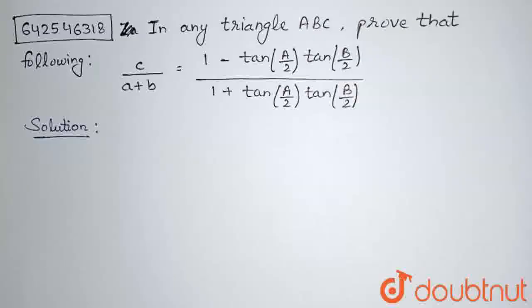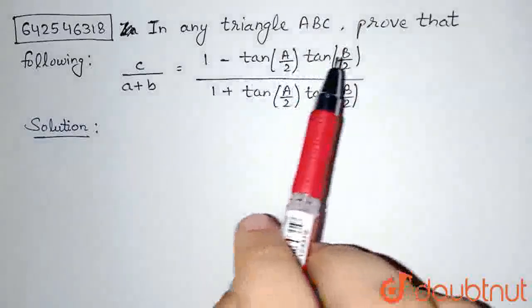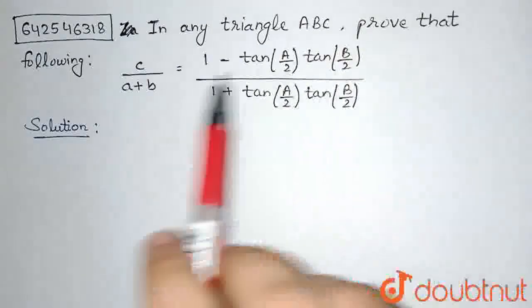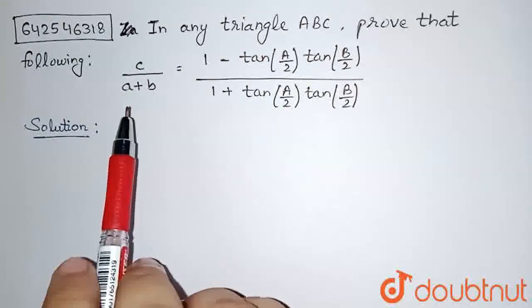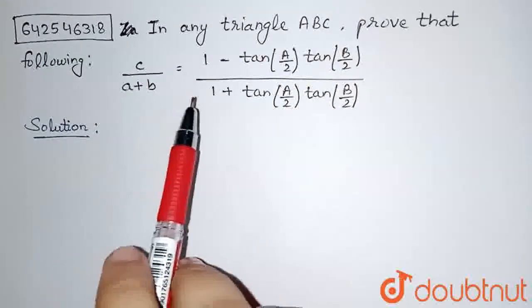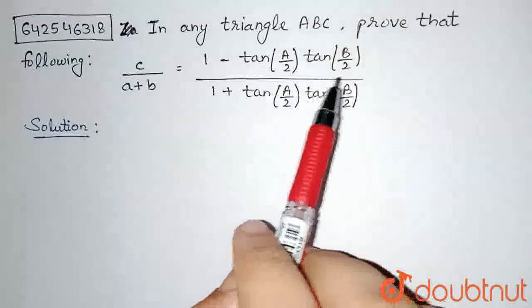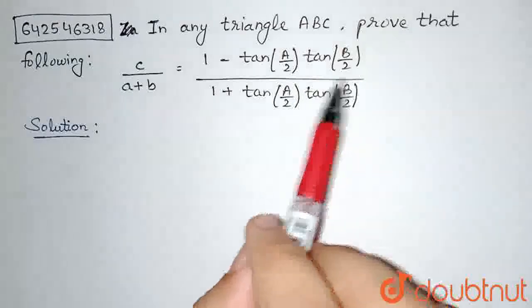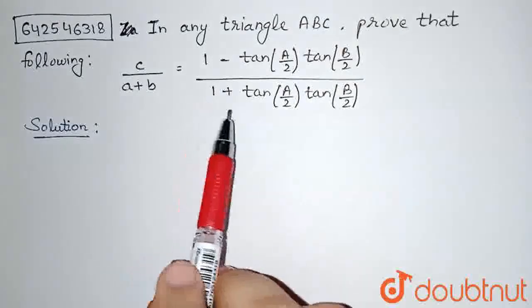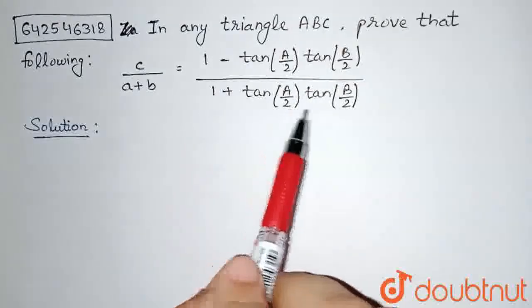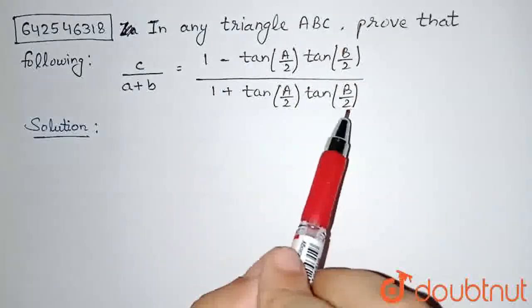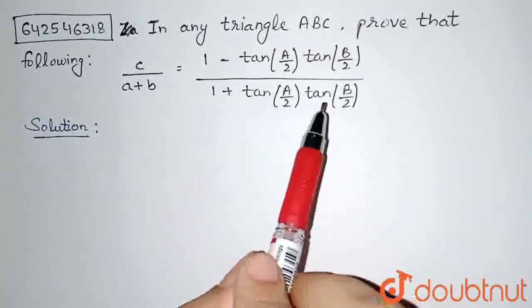The question is: in any triangle ABC, prove that c divided by (a + b) equals (1 minus tan(A/2)·tan(B/2)) divided by (1 plus tan(A/2)·tan(B/2)).